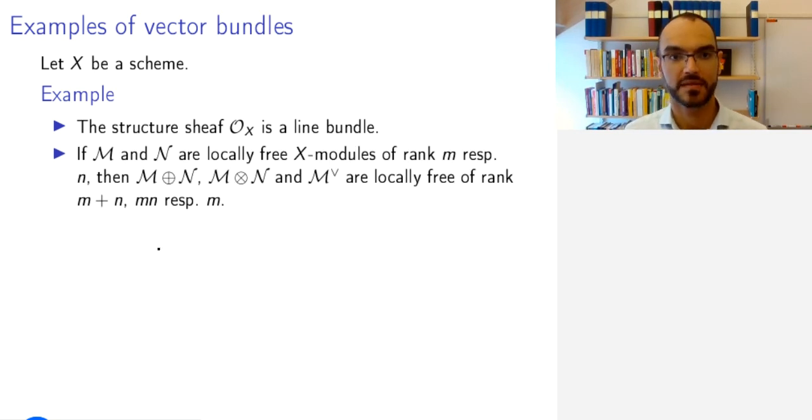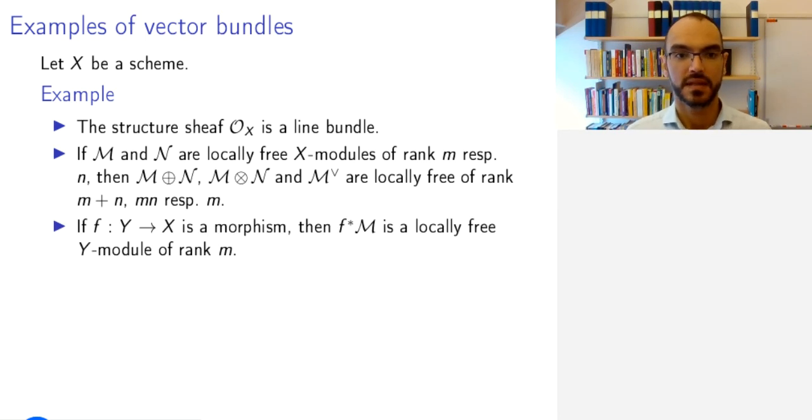You can check that if you have two locally free X-modules of rank m and n respectively, then their direct sum, tensor product, and the dual of either of them is locally free and the rank is what you would expect. To check this is to take an open cover where these, so to speak, trivialize, meaning where they are associated to modules M and N, and then the result follows from linear algebra on free modules.